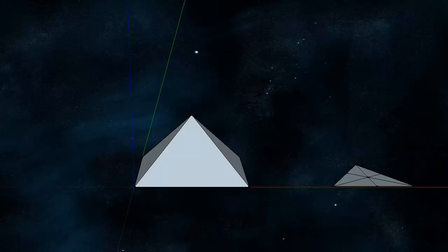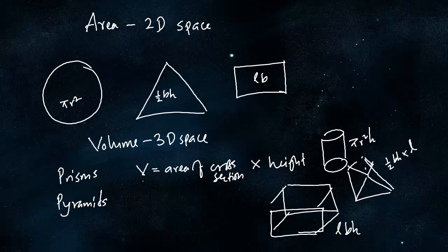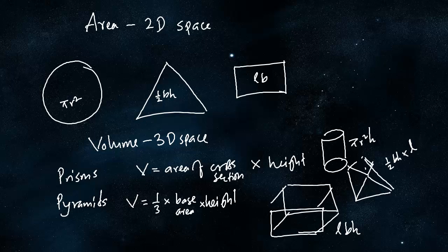A cone is made up of a circle at the base, and from the center it rises so that it looks like a pointed pyramid. When a triangle is raised this way, it is called a tetrahedron because it has four faces. The general volume formula for a pyramid is one third base area into height.